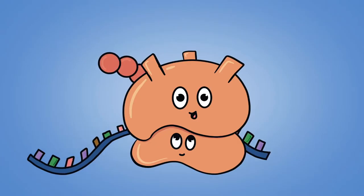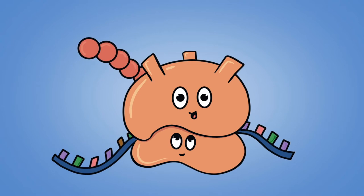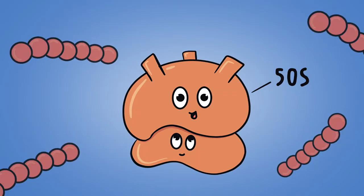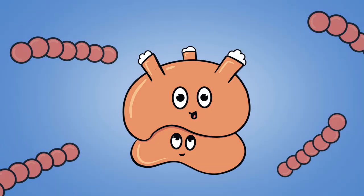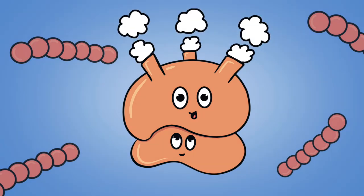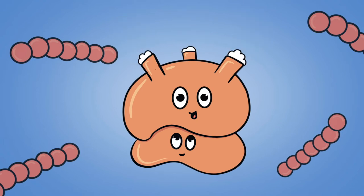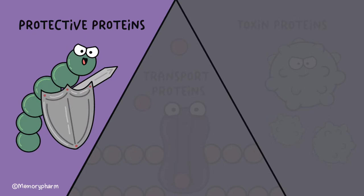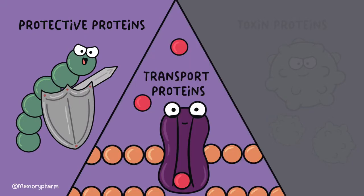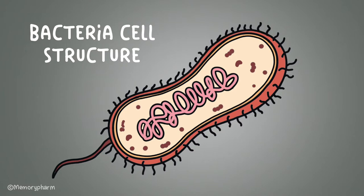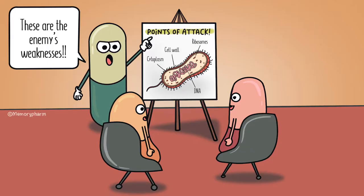Bacteria have ribosomes that translate messenger RNA into polypeptides and contain two subunits: the large 50S and small 30S subunits. Ribosomes are factories for protein synthesis. Proteins are responsible for all cell functions, including things such as protective proteins, transport proteins, toxin proteins, and so much more. Now that we remember the general structure of bacteria, let's talk about how different antibiotics target them.